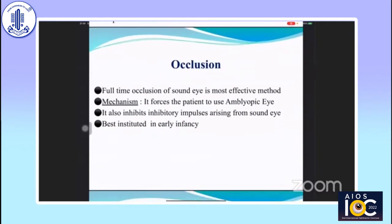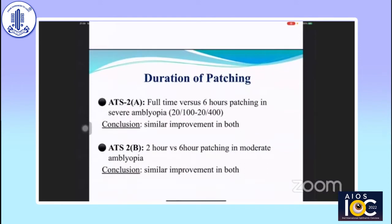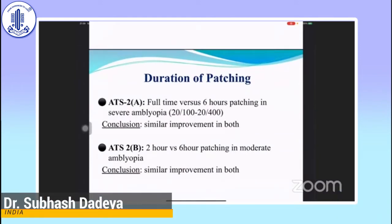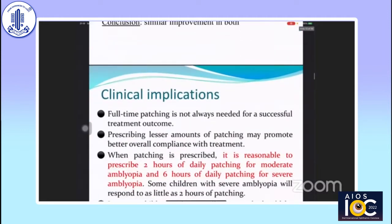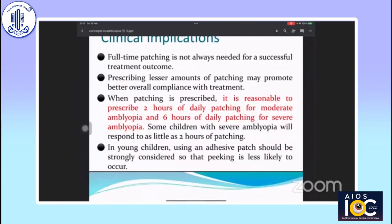There is no shortcut or substitute for occlusion in the treatment of amblyopia. It forces the patient to use the amblyopic eye, inhibits inhibitory impulses arising from the sound eye, and is best instituted in early infancy. ATS-2A and 2B addressed duration of patching. In ATS-2A, full-time patching versus six-hour patching in severe amblyopia showed equivocal results in both groups. In moderate amblyopia, two-hour patching was compared with six-hour patching and showed similar improvement. Clinical implication: full-time patching is not always needed. Two hours of daily patching is reasonable for moderate amblyopia and six hours for severe amblyopia. In young children, using an adhesive patch should be strongly considered so that peeking is not likely to occur.